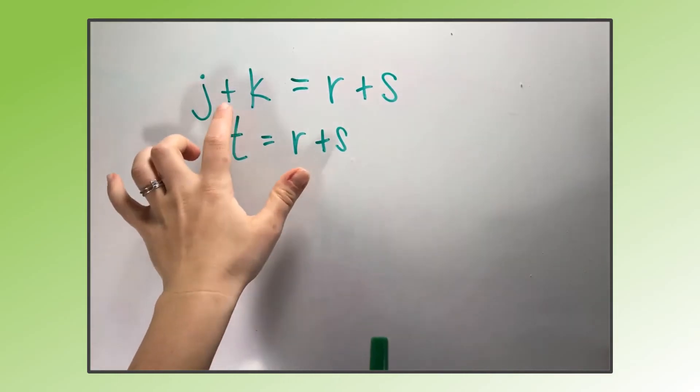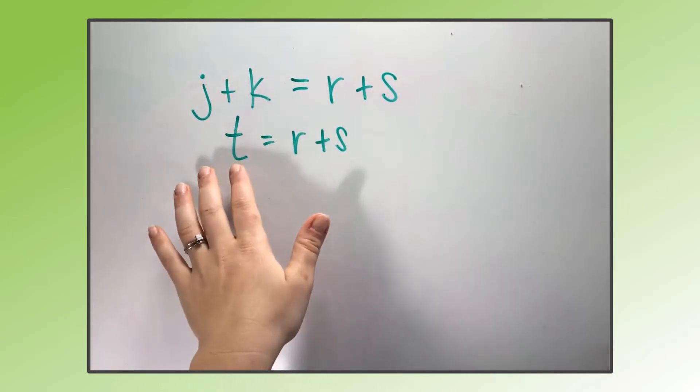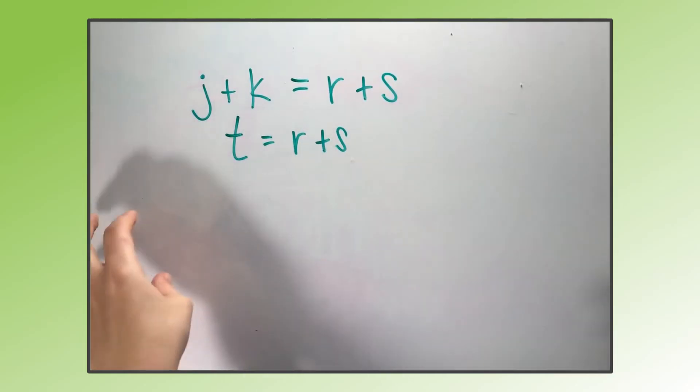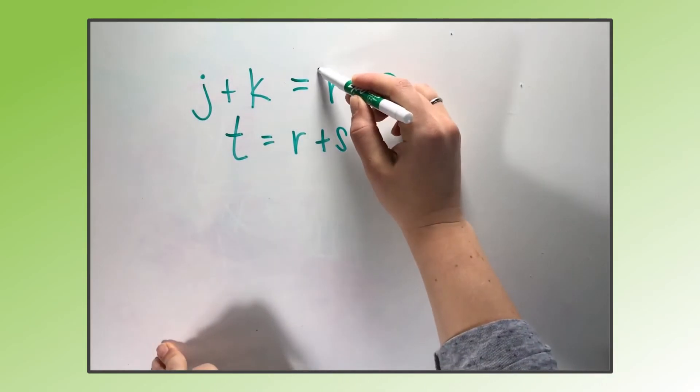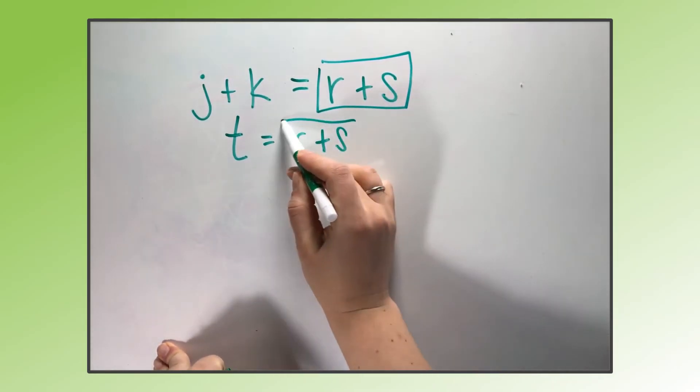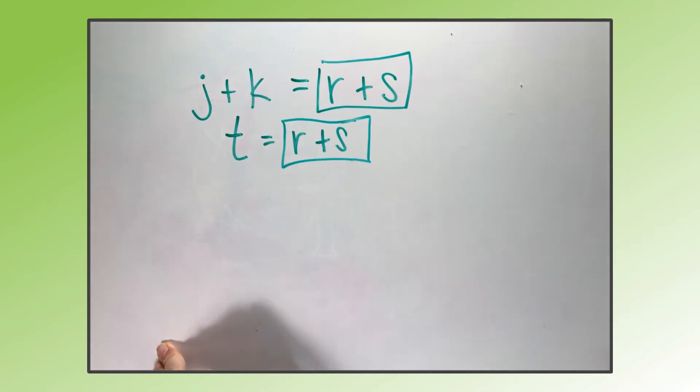Here's another example. If we have j plus k equals r plus s, and t equals r plus s, how can we use the transitive property to write a brand new line that combines these two? So first we want to box up what matches. r plus s is one whole side of that equation. r plus s is also one whole side of this equation.